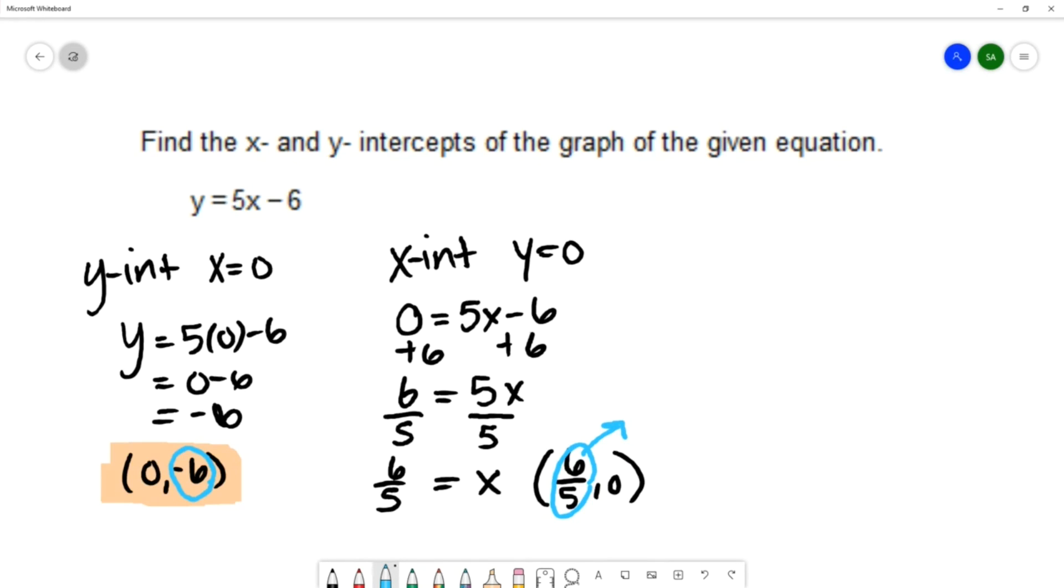You also want to pay attention to whether the answer should be written in decimal form or fraction form. If you needed to write this in decimal form, if it told you to do that in the directions, you would do that calculation to get 1.2.